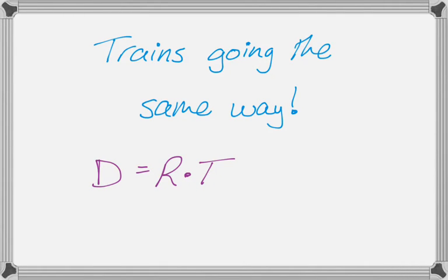Okay, in this video we're going to solve a problem about two trains that are going the same way toward a city and they're going at different rates and stuff like that.